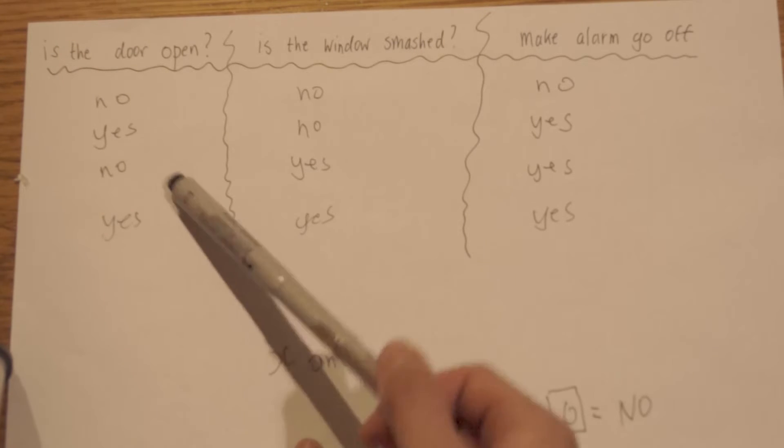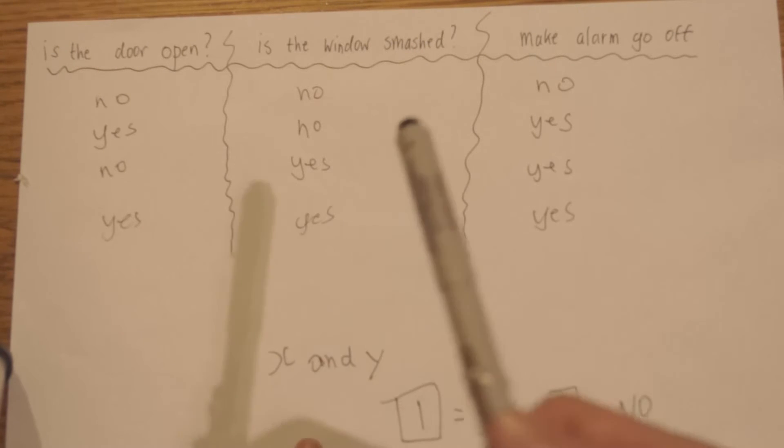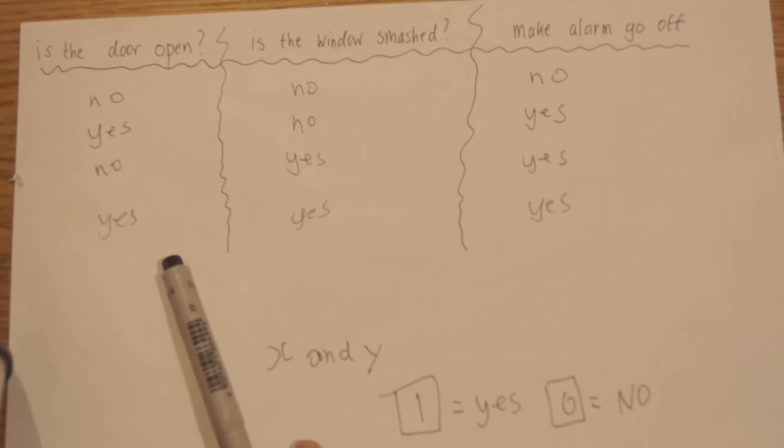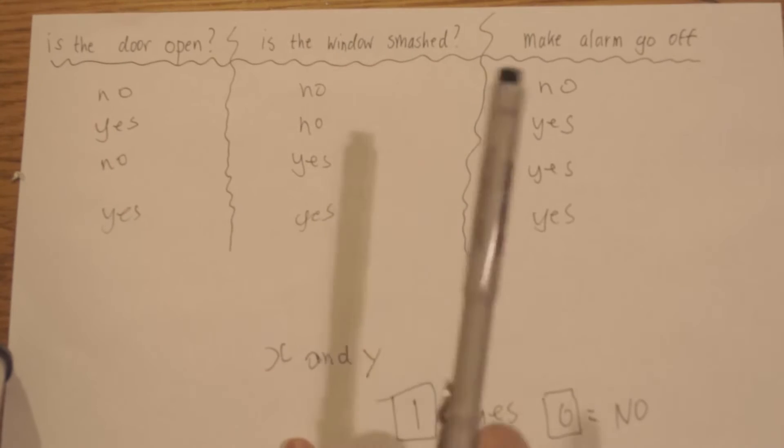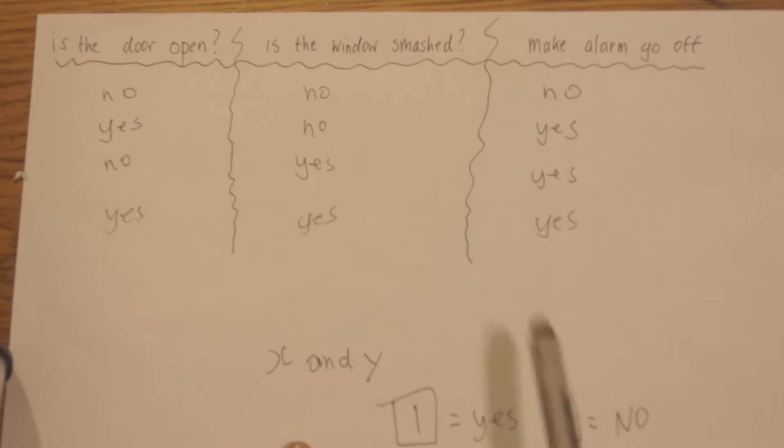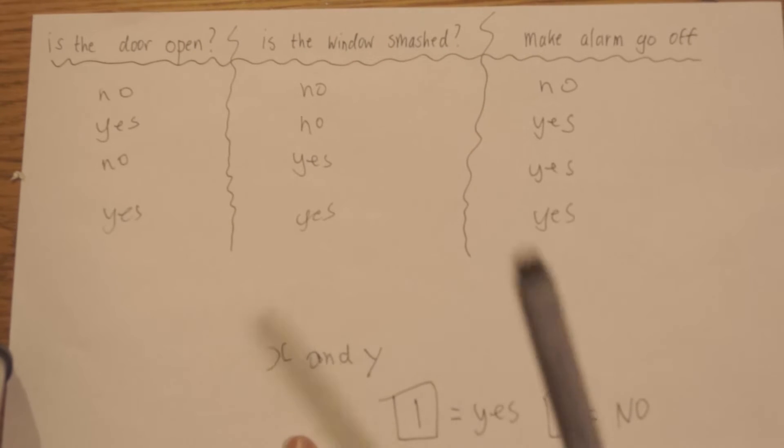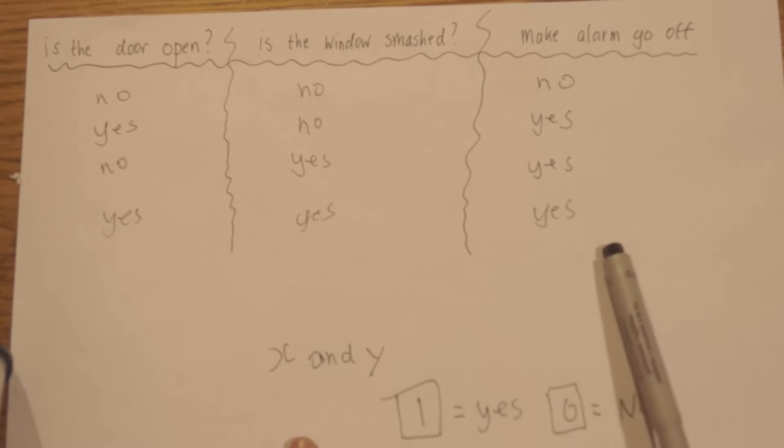Now if the door is not open but the window is smashed, we will still make the alarm go off. And if the door is open and the window is smashed, this is the worst case scenario. You got two burglars or even more in your house, so of course you have to make the alarm go off.